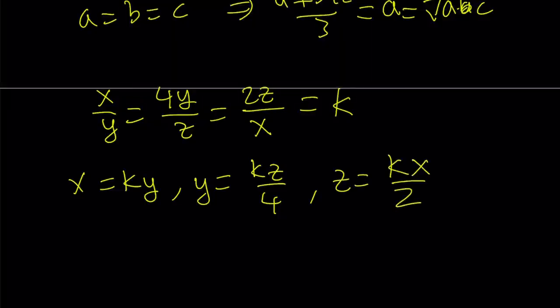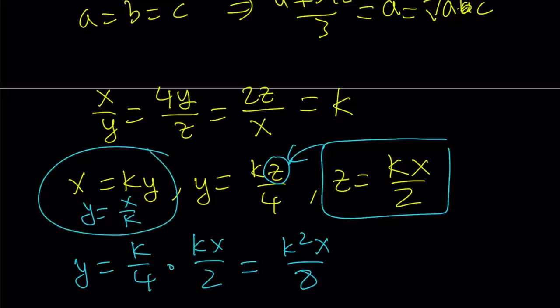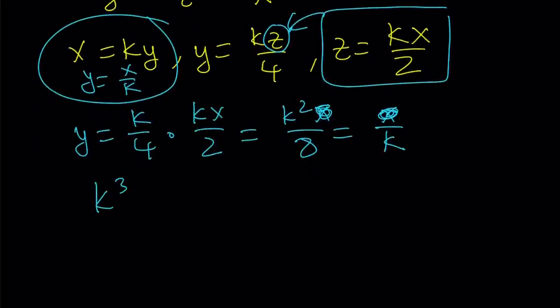I want to substitute z with kx over 2, and that gives me y equals k over 4 times kx over 2, which can be written as k squared x over 8. But y can also be written as x over k from here. If I set y equal to x over k, x cancels out, and I get k cubed equals 8, which is nice, because this gives me k equals 2.